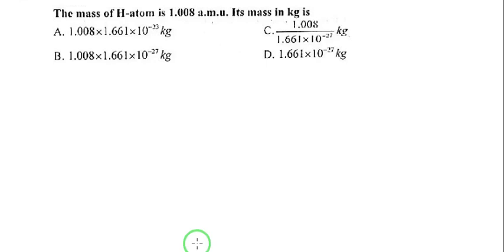Hello student, welcome to I Am Chemist. This is Imran. We have another MCQ from chapter number one. The mass of hydrogen atom is 1.008 amu. Its mass in kg is - amu, that is the atomic mass unit.